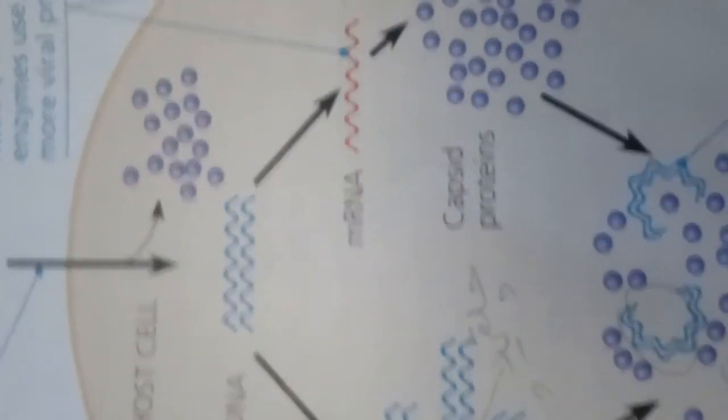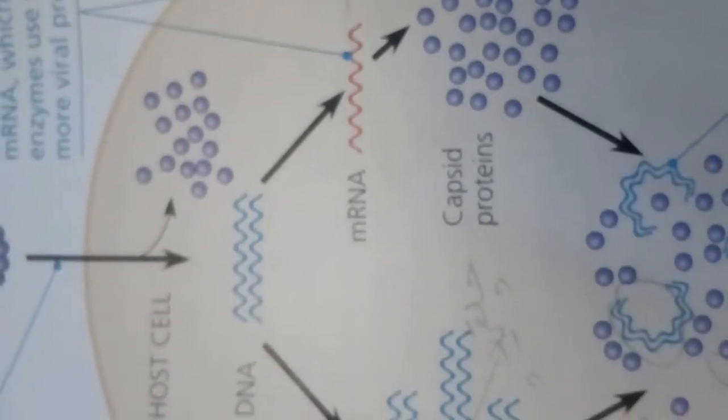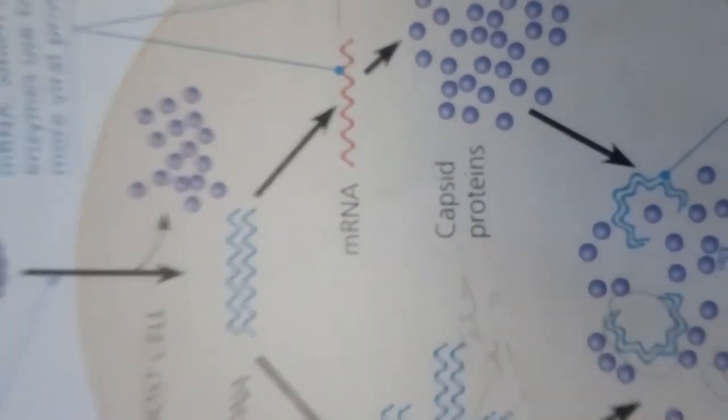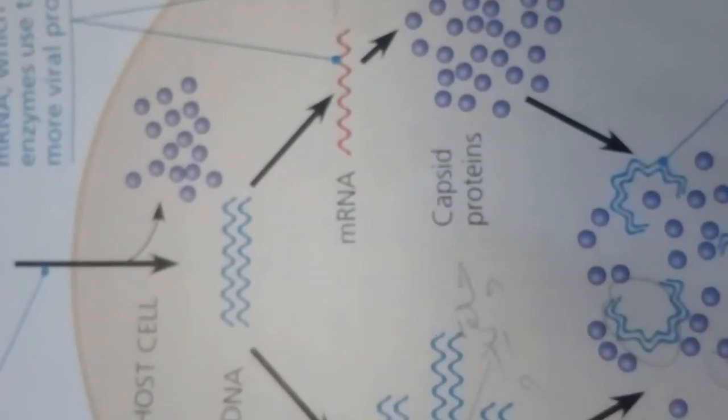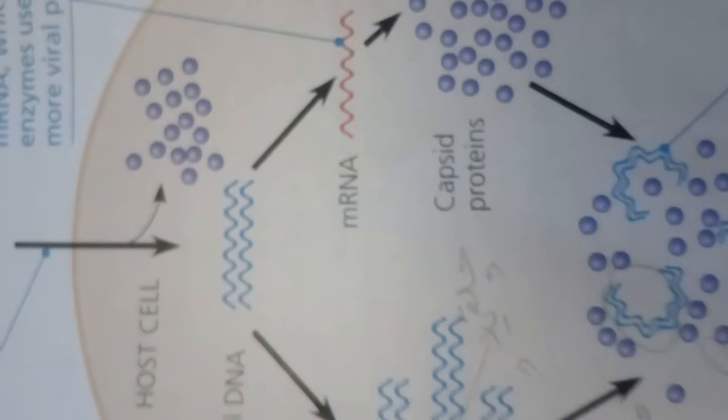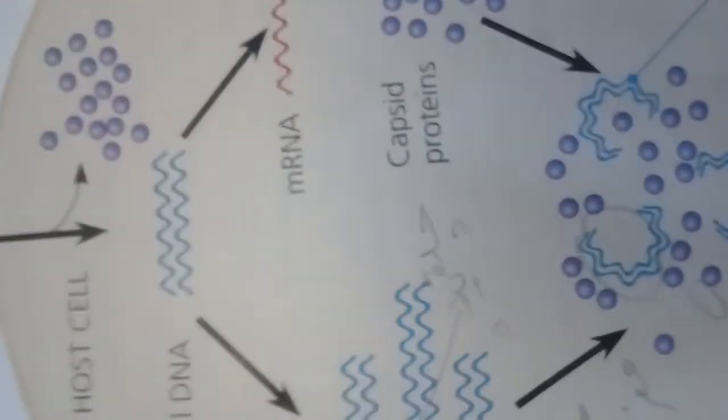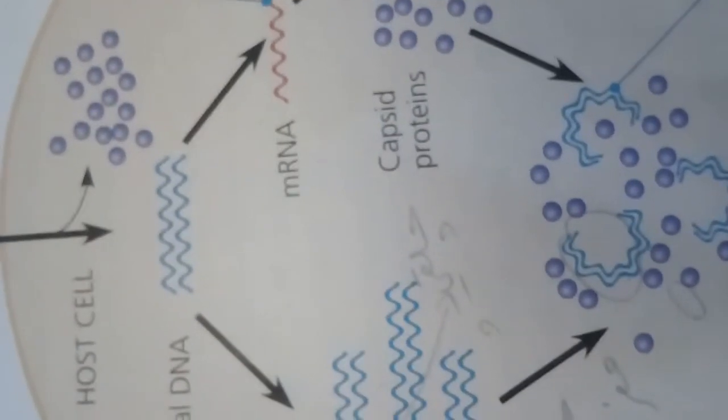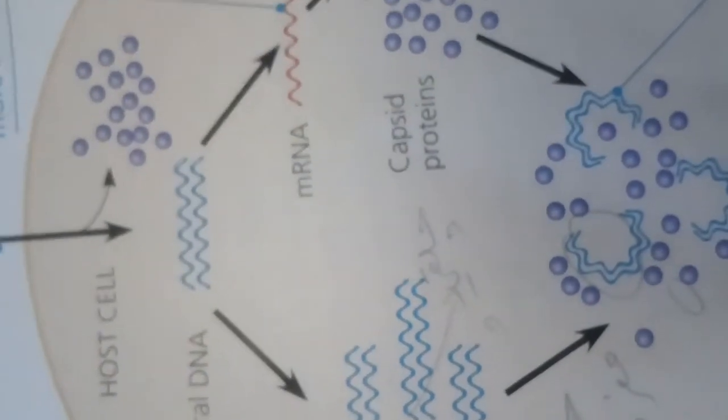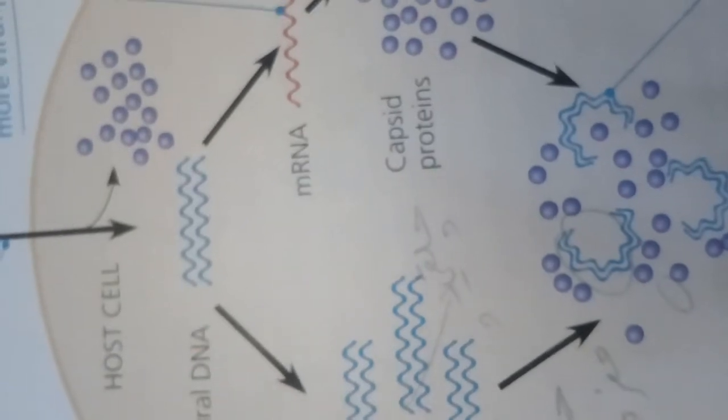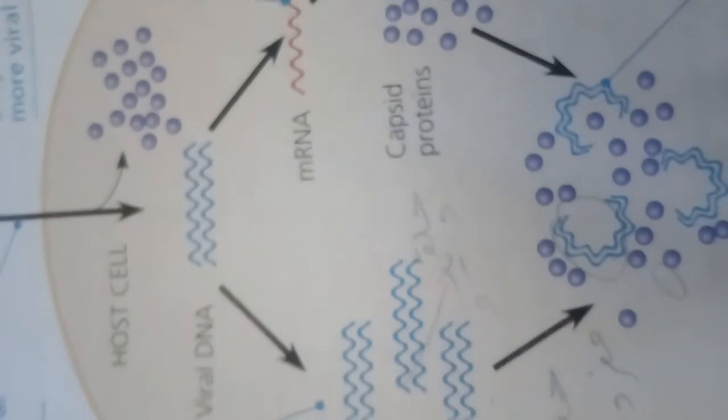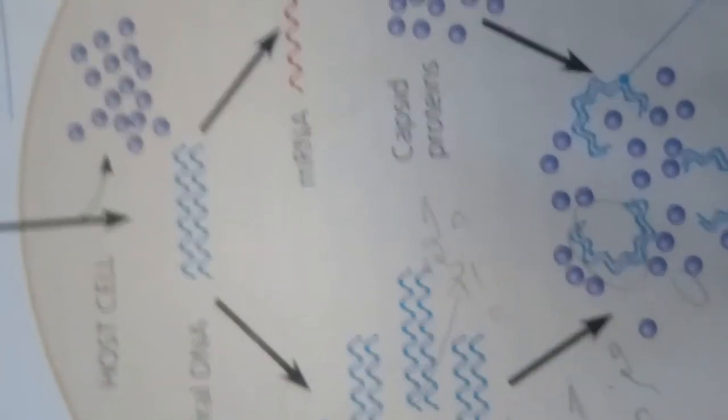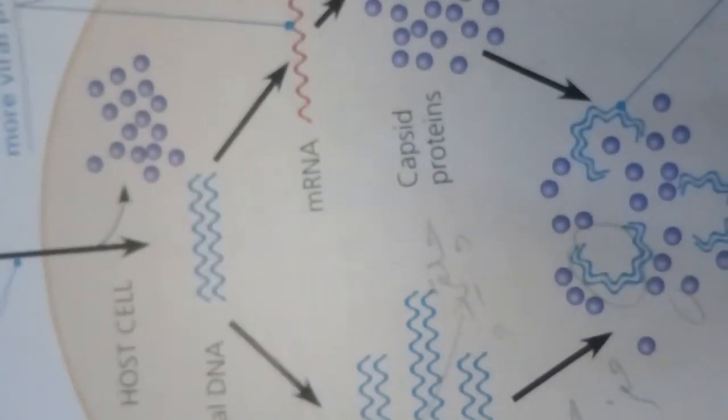Infection by viruses of multicellular eukaryotes is usually limited to particular tissues. The human cold virus infects only the cells lining the upper respiratory tract, and the AIDS virus binds to specific receptors on certain types of white blood cells. A viral infection begins when the genome of a virus makes its way into a host cell.